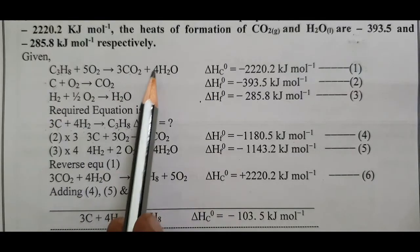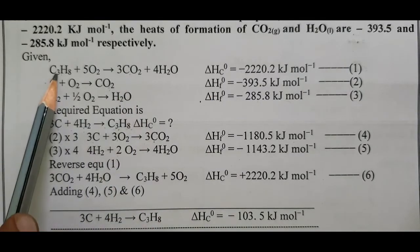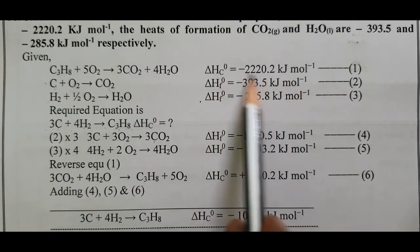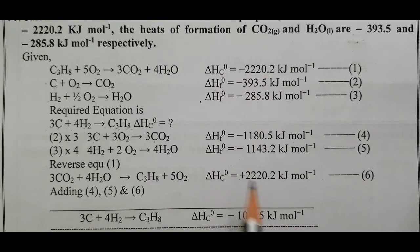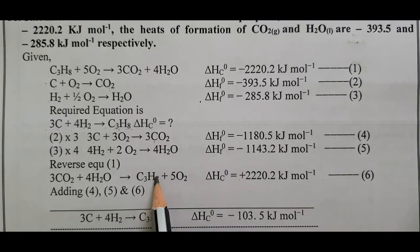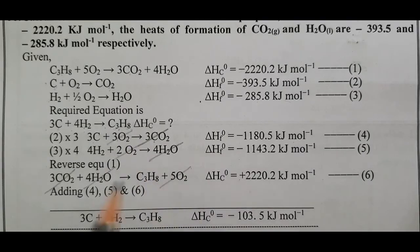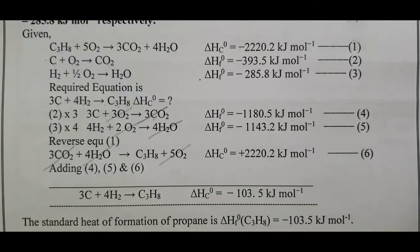Reversing equation 1: 3CO2 plus 4H2O gives C3H8 plus 5O2, with sign changed to plus. Adding all equations: 3CO2 cancels, 4H2O cancels, 3O2 plus 2O2 equals 5O2. So 3C plus 4H2 gives C3H8. Adding all delta H values gives the standard heat of formation of propane equals minus 103.5 kilojoule mole power minus 1.